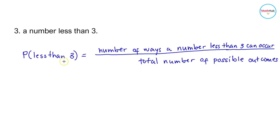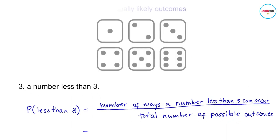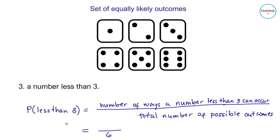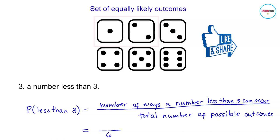Next, let's find the probability of rolling a number less than 3. This is computed by dividing the number of ways a number less than 3 can occur by the total number of possible outcomes. The total outcomes is 6. From the set of equally likely outcomes, we have 1 and 2, which are the two numbers less than 3. So there are 2 ways this can occur, and 2/6 reduces to 1/3.